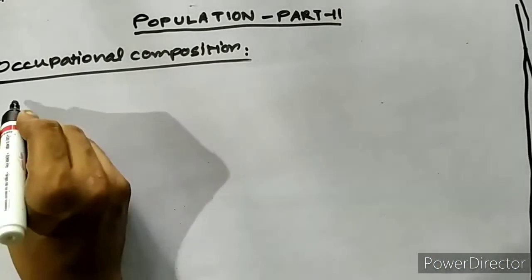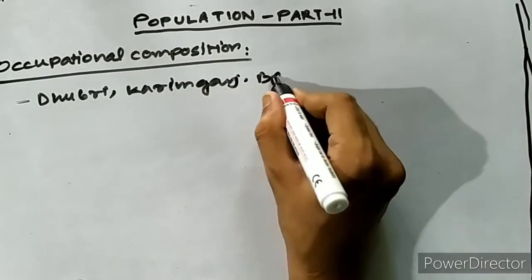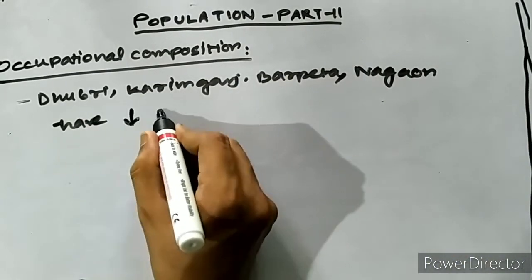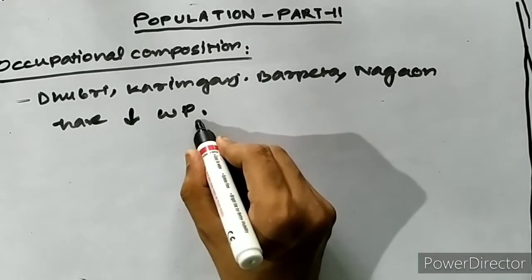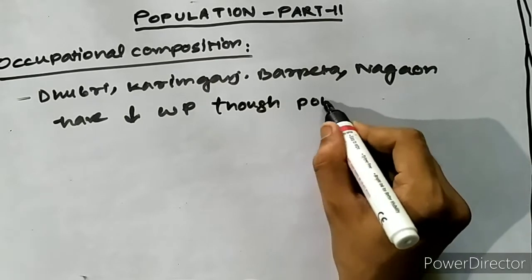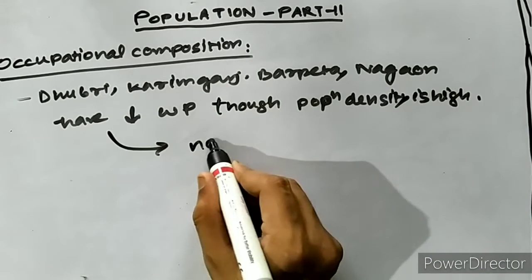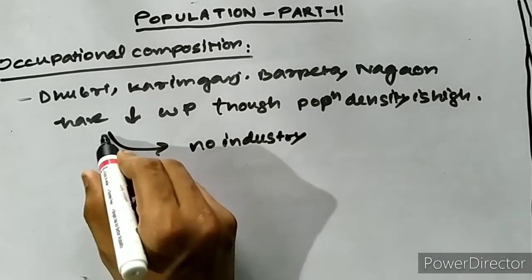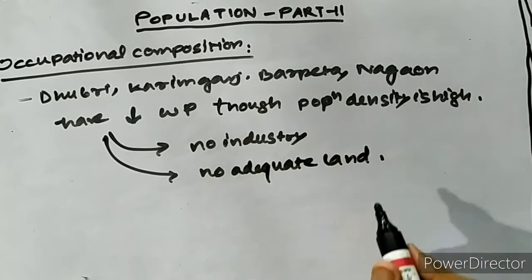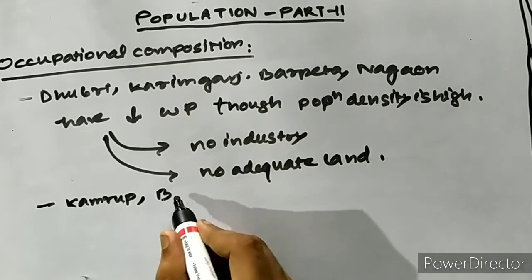Interestingly, the districts of Dhubri, Karimganj, Barpeta, Nagaon, and Cachar have remarkably small working population, though these districts have very high population density. They have neither industry nor adequate land to carry out agriculture, so the working population moves outside in search of employment and livelihood.